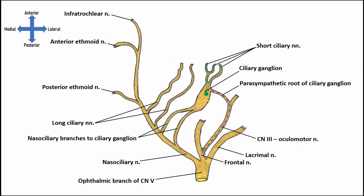There's one more thing going on with the ciliary ganglion. We also have sympathetic neurons projecting to it via a sympathetic route, conveying postganglionic sympathetics from the superior cervical ganglion to the ciliary ganglion. Because they've already synapsed, they just pass through without synapsing again and distribute themselves along the short ciliary nerves to reach the radial fibers of the iris, causing pupillary dilation. That's what's going on with the branches of the ophthalmic nerve relative to the orbit.